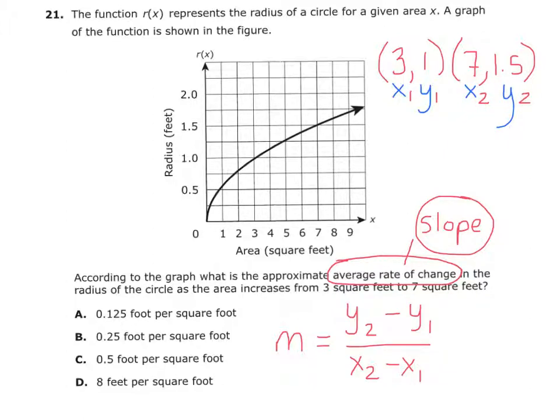Now we'll just plug them into the formula. And so my slope equals y2, which is 1.5, minus y1, which is 1, over x2, which is 7, minus x1, which is 3.